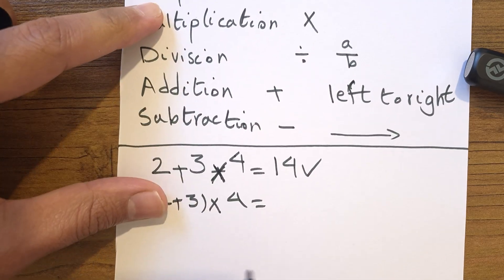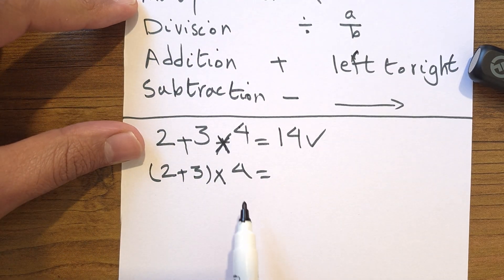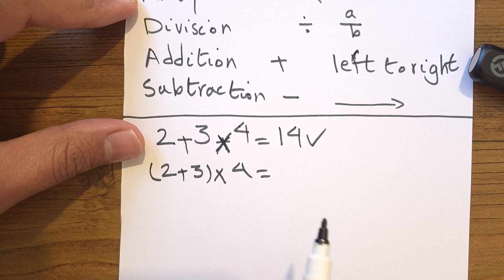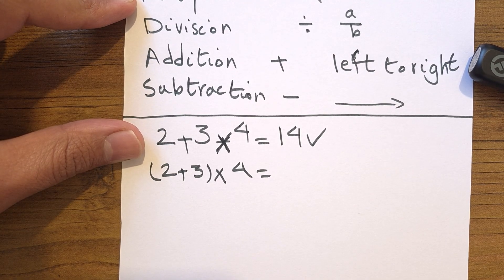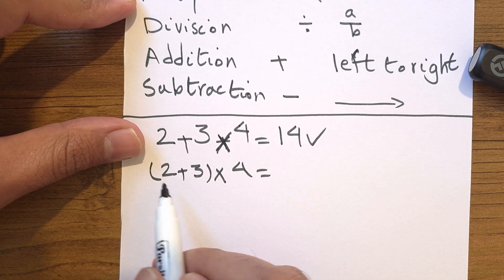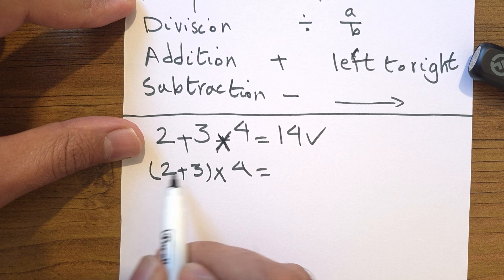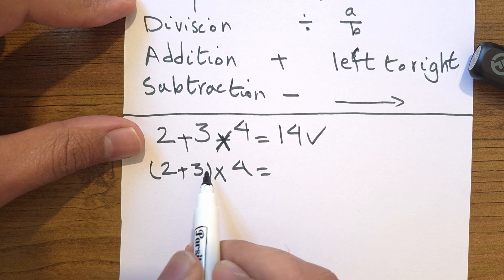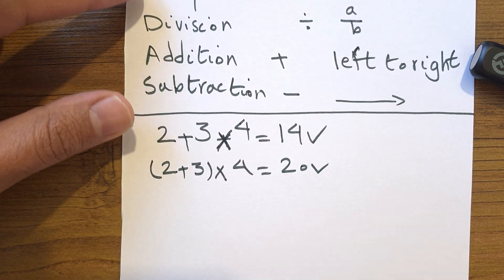However, it changes everything if we put 2 plus 3 inside parentheses and then times 4. Now parentheses have a higher priority than multiplication — P stands for parentheses and it has the highest priority. So you solve whatever is inside the parentheses first: 2 plus 3 is 5, and then 5 times 4 is 20. Now this is correct.